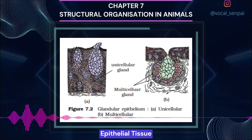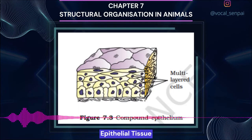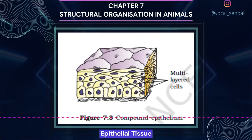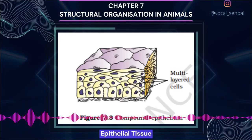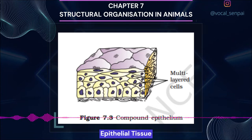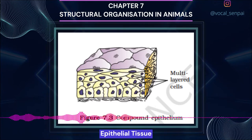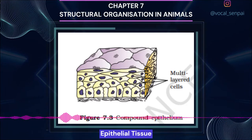Exocrine glands secrete mucus, saliva, earwax, oil, milk, digestive enzymes and other cell products, released through ducts or tubes. In contrast, endocrine glands do not have ducts; their products called hormones are secreted directly into the fluid bathing the gland. Compound epithelium is made of more than one layer of cells and has a limited role in secretion and absorption (figure 7.3). Its main function is to provide protection against chemical and mechanical stresses. It covers the dry surface of the skin, moist surface of buccal cavity, pharynx, and inner lining of ducts of salivary glands and pancreatic ducts.